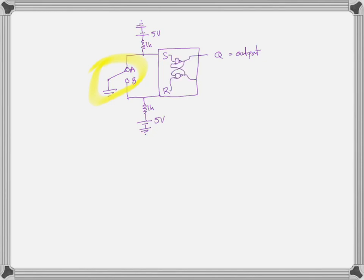Our SR latch is just two NAND gates. I care about the Q output, not Q-not. The S input is the input to the top NAND gate, and R is the input to the bottom NAND gate. When the switch is attached to input A, you're shorting the five volt power supply, which makes S equal to zero. The bottom power supply goes directly into R, so R is high — R equals one. In this state, S = 0 and R = 1, and looking at the SR latch truth table, Q equals one.